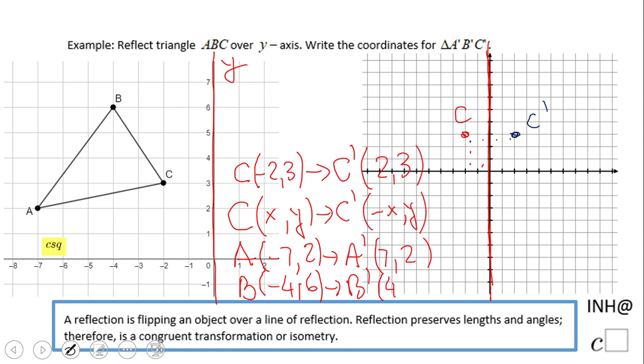We can plot that and get the triangle, which I'm going to do right now. So A prime is at (7, 2): 1, 2, 3, 4, 5, 6, 7 and 1, 2. And B prime at (4, 6): 1, 2, 3, 4, 1, 2, 3, 4, 5, 6.